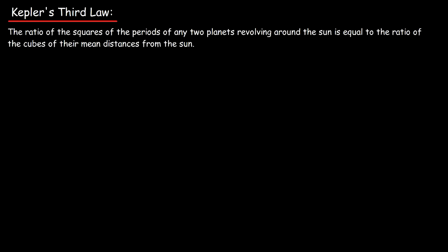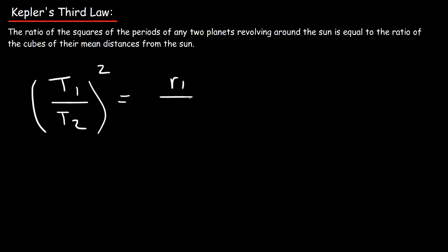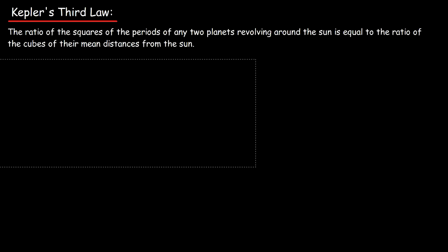In this video we're going to talk about Kepler's Third Law. The gist of this law is that the ratio of the squares of the periods of any two planets revolving around the Sun is equal to the ratio of the cubes of their mean distances from the Sun: (T₁/T₂)² = (R₁/R₂)³. This equation is associated with Kepler's Third Law.